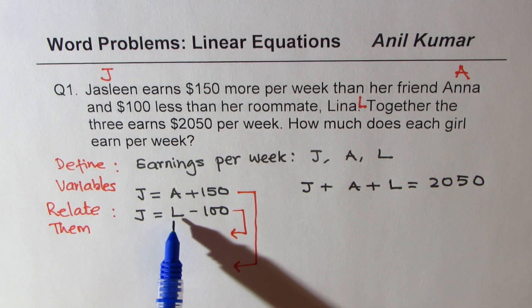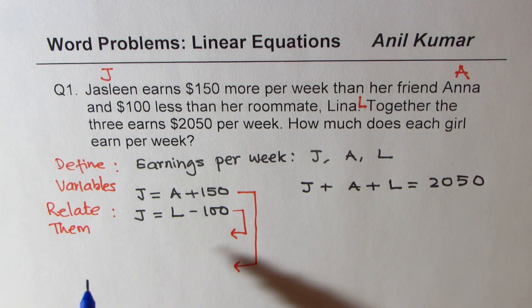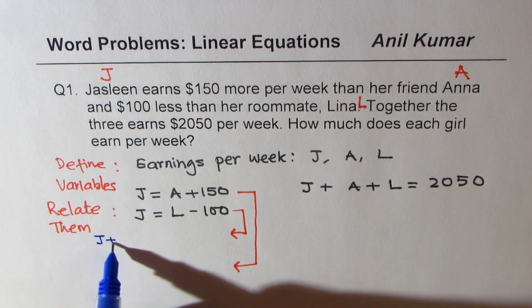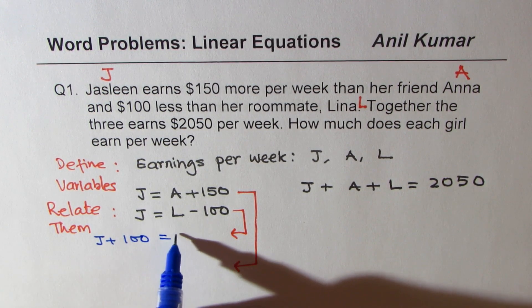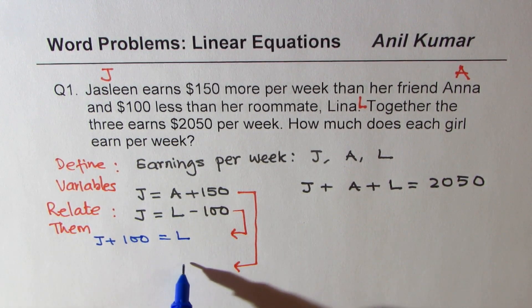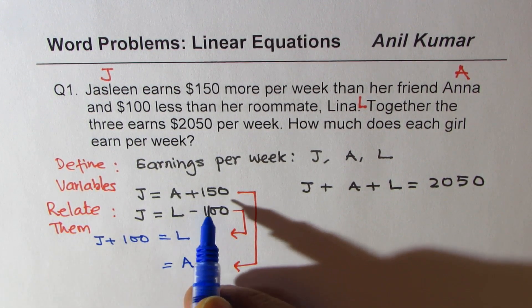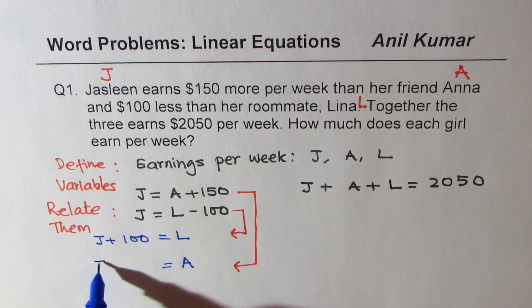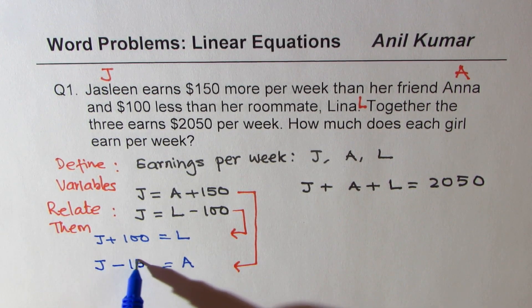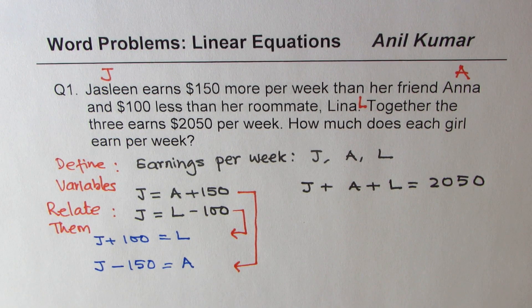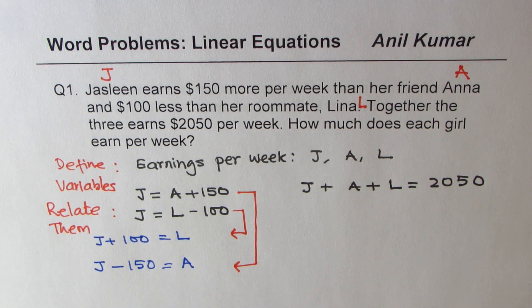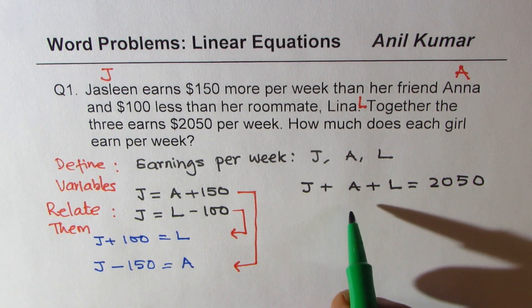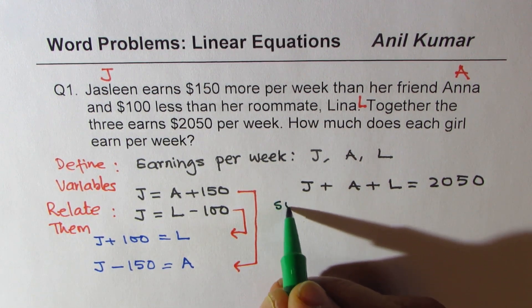So here I can get what L is by transferring 100 to the left side, so we get J plus 100 equals L. And here we get what A is by transferring 150 to this side which is J minus 150 equals A. Now the next step here is to substitute.